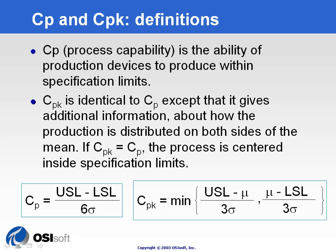We have already talked about metrics or indexes designed to assess the capability of the process. When we're talking about process capability, it's really the ability of producing some material within the specification limits, so in compliance with some customer requirements. We're trying to assess that the natural variability of the process actually fits within the specification limits required by the customer.